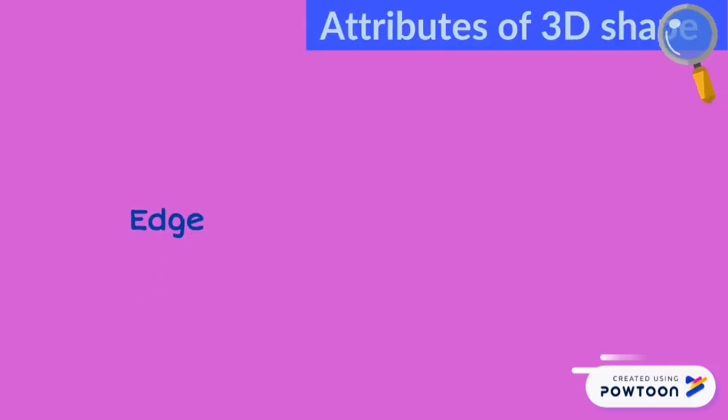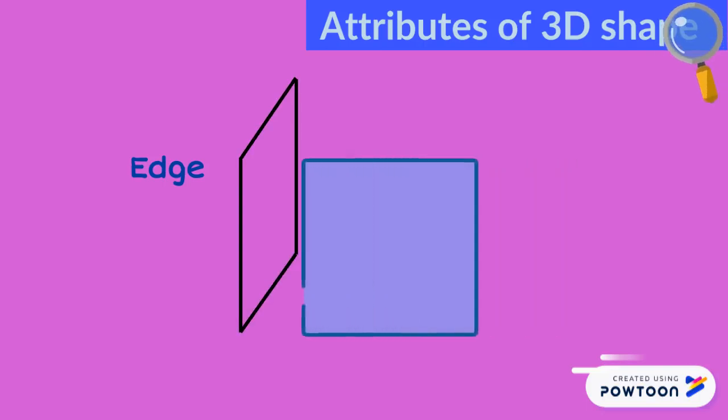The second attribute is the edge. The edge of a 3D shape is the line where two of its surfaces meet.